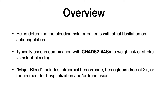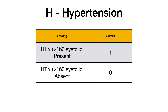H-A-S-B-L-E-D — all of these letters stand for something. The H stands for hypertension, and to be perfectly clear, we're only talking about systolic — we don't care about diastolic here. If you have greater than 160 systolic hypertension, that's one point. If you do not, you get zero points.